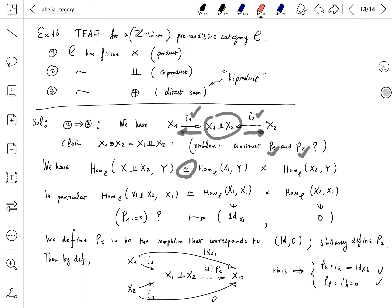In particular, take Y equals X1. This gives us an isomorphism of groups. In particular, this isomorphism is not only bijective, but an isomorphism of groups. So on the right-hand side, you have in particular in this group hom(X1, X1) you have the identity, identity X1.